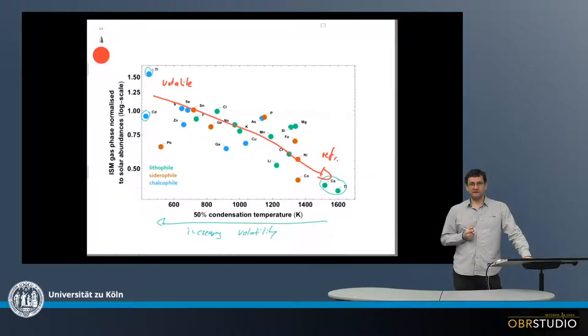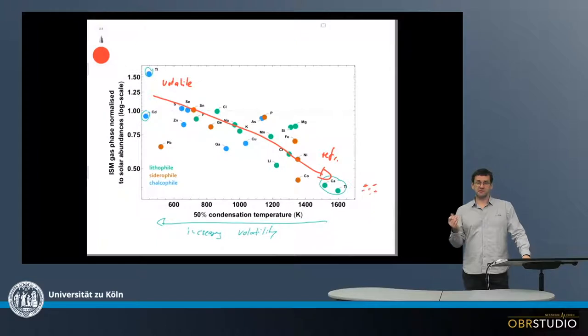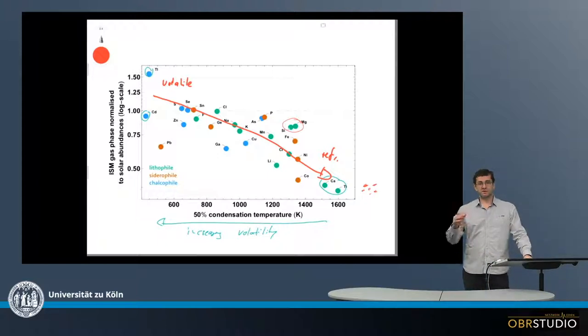Now how do we explain this pattern? Most easily, assuming that there are grains that are condensed from the interstellar medium gas. And these grains contain all the refractory elements, but also main elements like magnesium, silicon, which are also depleted relative to solar values. And these grains contain maybe oxides, silicates, and so on.